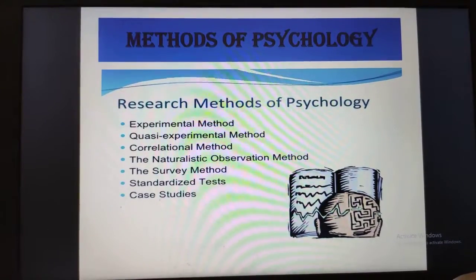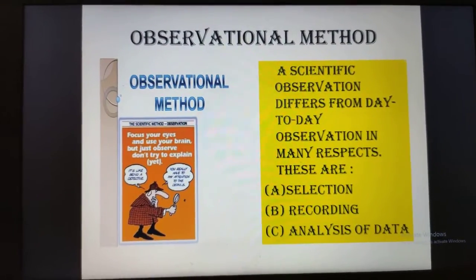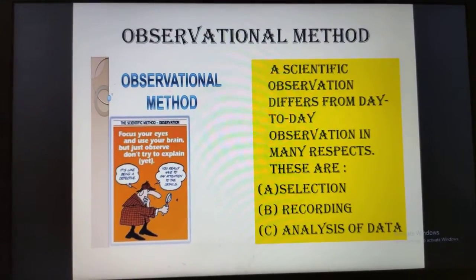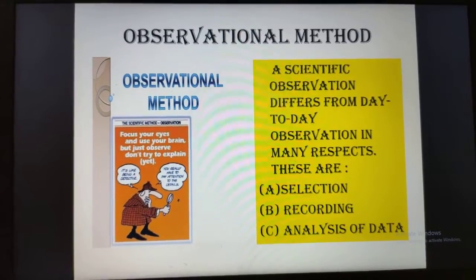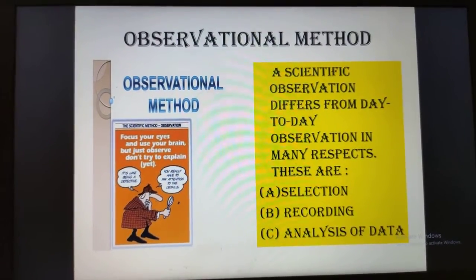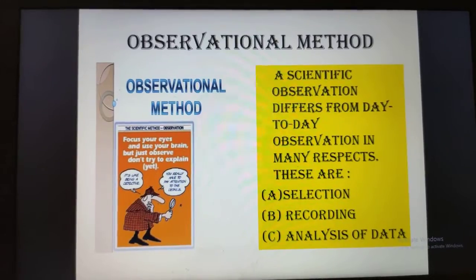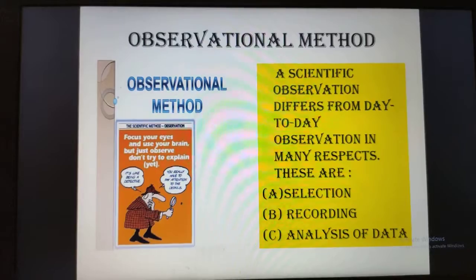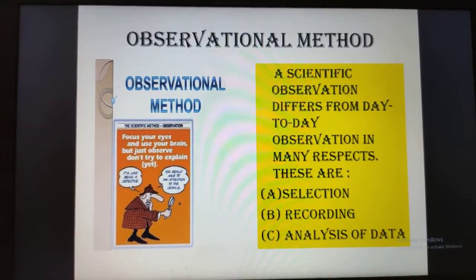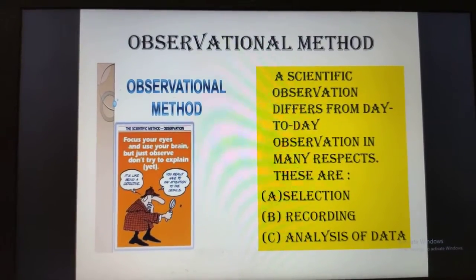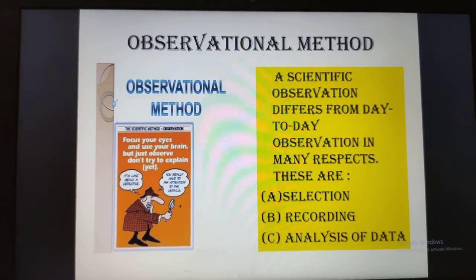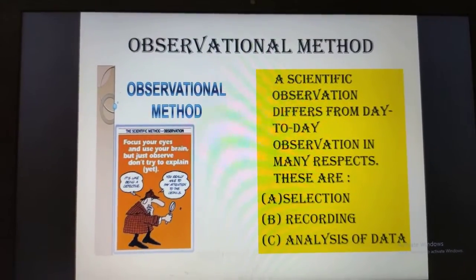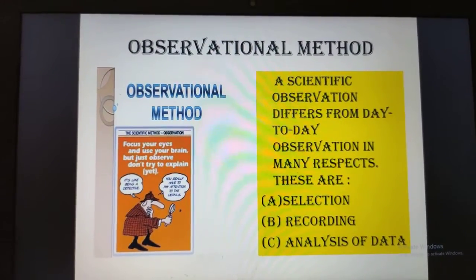Now we will take up the observational method today. Observation is a very powerful tool of psychological inquiry which helps in describing behavior. A scientific observation differs from day-to-day observation in many respects, which includes selection of the data — psychologists do not observe all behavior but select a particular behavior. For example, if you want to study the activities of nursery children, you can observe them in the school setting.